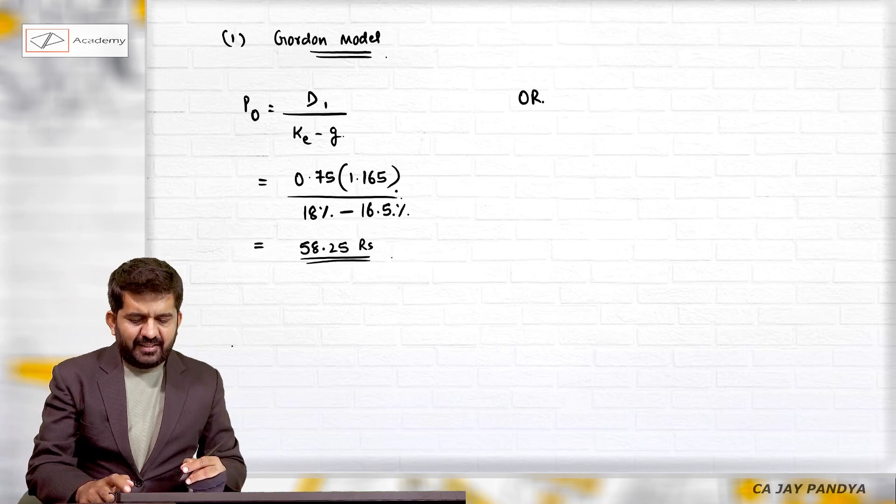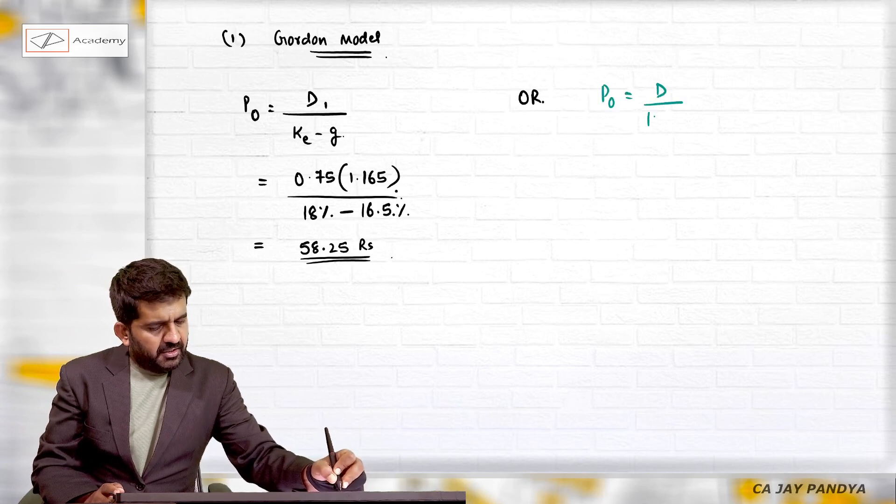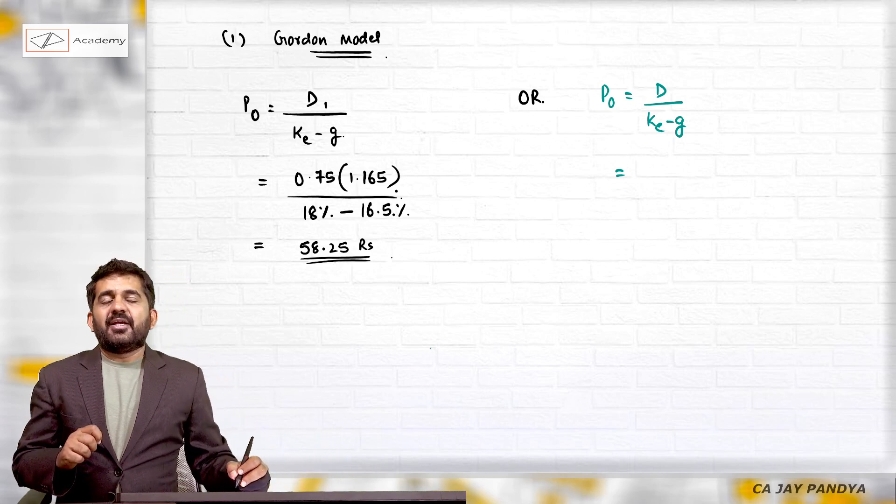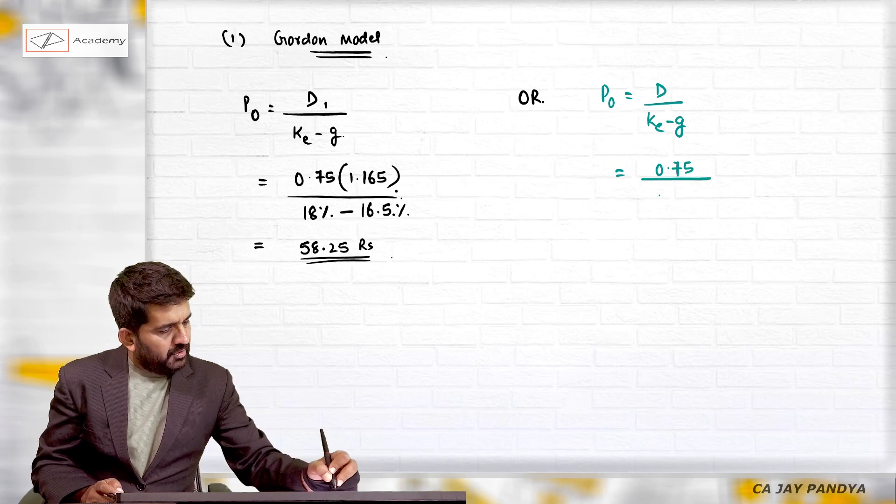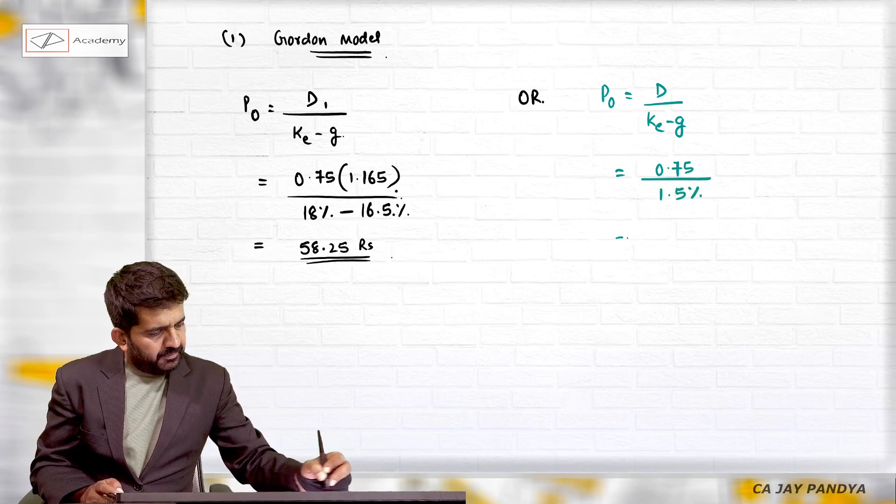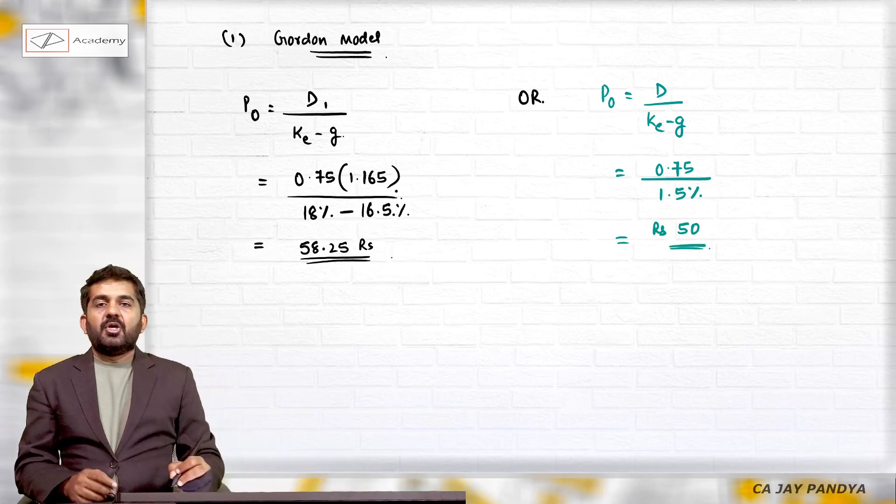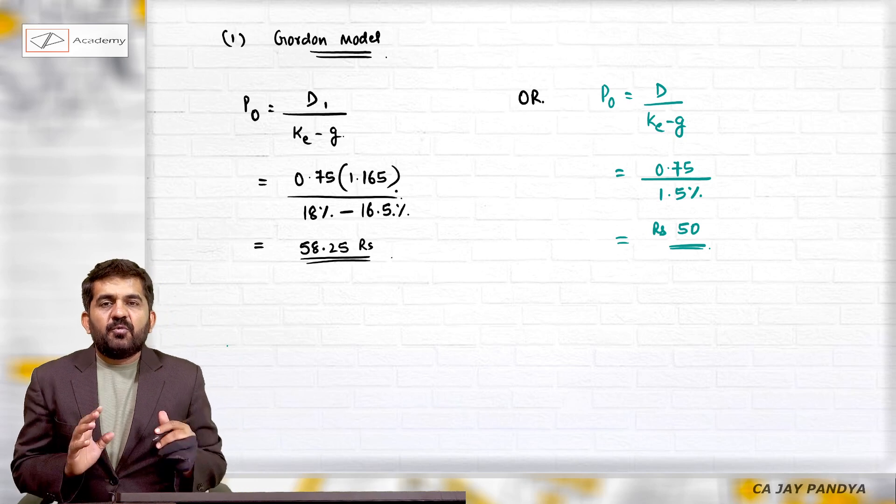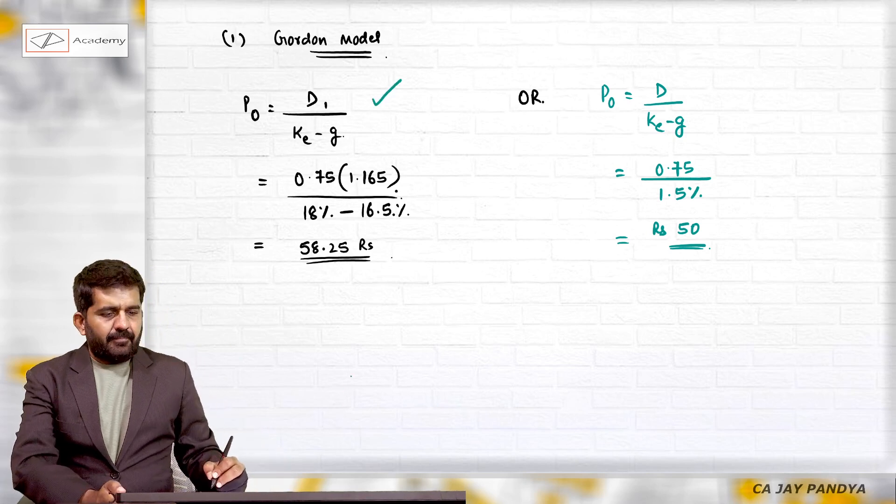Please understand another method which you can use: you can directly use D upon Ke minus g. So assuming there will be no growth rate in first year, you can do this: 0.75 upon 1.5%, which is 50 rupees. Both answers are given in suggested answers; both will give you full marks. Which is logically and technically correct? Answer is this - number two.